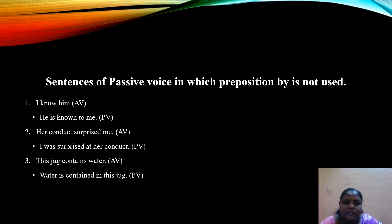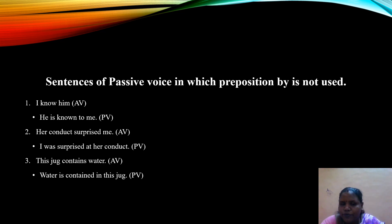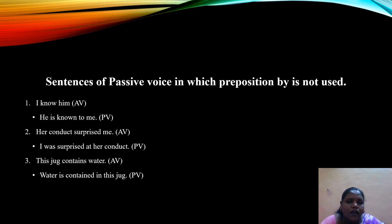In certain sentences, while using passive voice, we need not use 'by.' For example, 'I know him' becomes 'He is known to me' — not 'He is known by me,' which is incorrect. 'Her conduct surprised me' becomes 'I was surprised at her conduct' — not 'by her conduct.' 'This jug contains water' becomes 'Water is contained in this jug' — not 'by this jug.' So while changing into passive voice, we should be very sure the sentence structure is right. At times we may use prepositions other than 'by' to make the sentence correct.